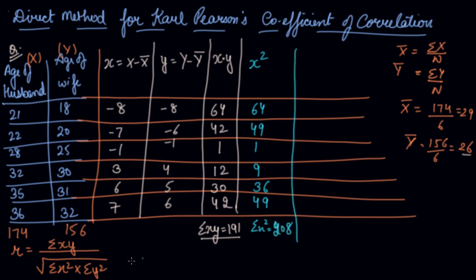Now we need summation y square. So y square is the square of y series: 8 times 8 is 64, 36, 1, 16, 25, and 36. So y square is 178.